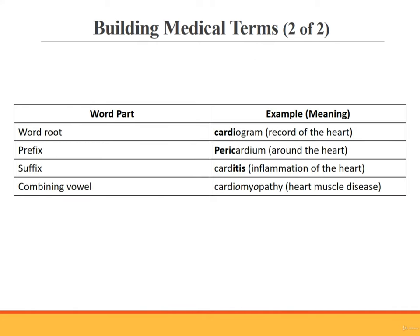To help you get a sense of the word parts, let's look at some examples of how medical terms are built. We will use the same root for each term. Pay attention to the ways the different parts change this root. Cardi is the word root in the term cardiogram. A cardiogram is a record of the heart. Notice that the word root is the foundation of this term.